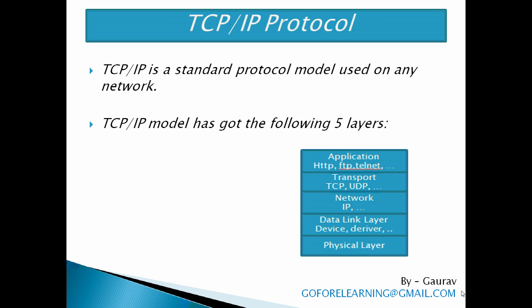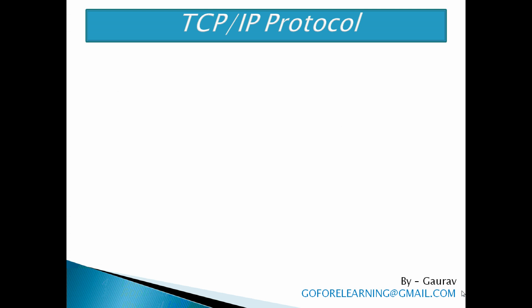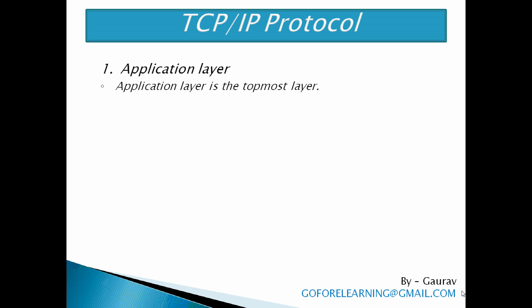The TCP/IP model has got the following five layers: Application layer, TCP, IP, Data Link layer, and Physical layer. The Application layer is the topmost layer of the TCP/IP model that directly interacts with an application or data. This layer receives data from the application, formats the data, and then sends it to the next layer called TCP in the form of a continuous stream of bytes.